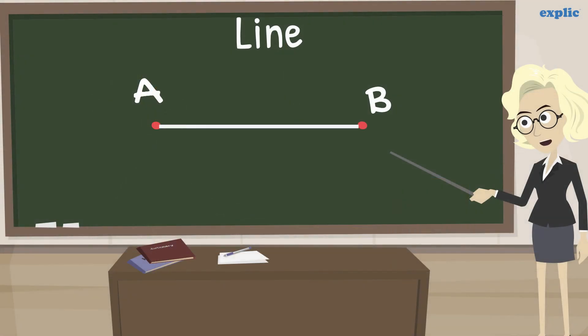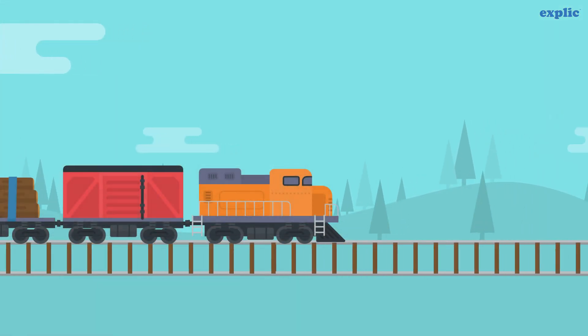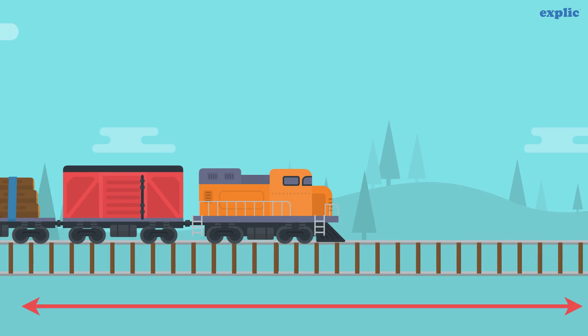If both ends of the line segment is extended endlessly, it will become a line. To write the name of a line, write the name of the points together with a both-sided arrow on the top. Train tracks resemble a line, as it goes endless comparatively.